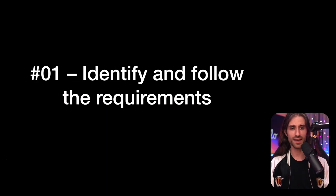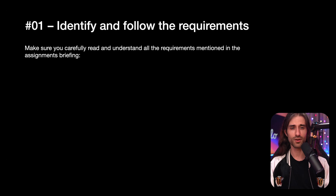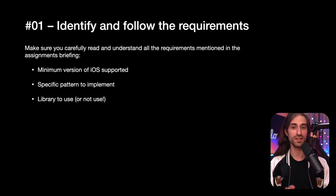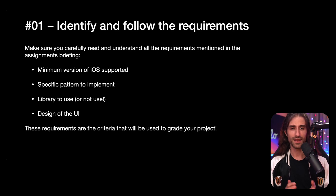Tip number one is to make sure that you identify and follow all the requirements of the assignment. Carefully read and understand all the requirements mentioned in the briefing. By requirements, I mean things like the minimum version of iOS that must be supported, a specific pattern to implement like MVVM or the coordinator pattern, a library that you're supposed to use or not use — for instance UIKit or SwiftUI, or using Alamofire, or instead implementing everything through the native URL session. But also the expected design of the UI. These are the criteria that will be used to grade your project.